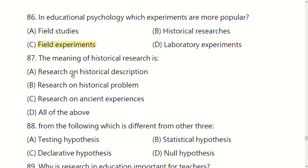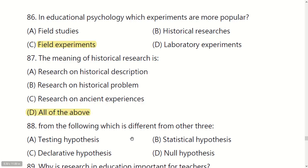The meaning of historical research is: research on historical description, research on historical program, research on ancient experience, or all of the above. The right answer is D: all of the above.